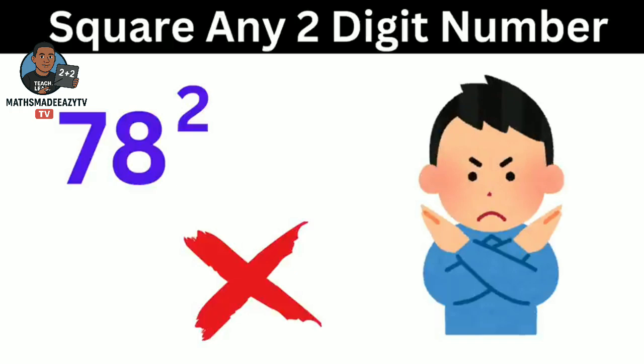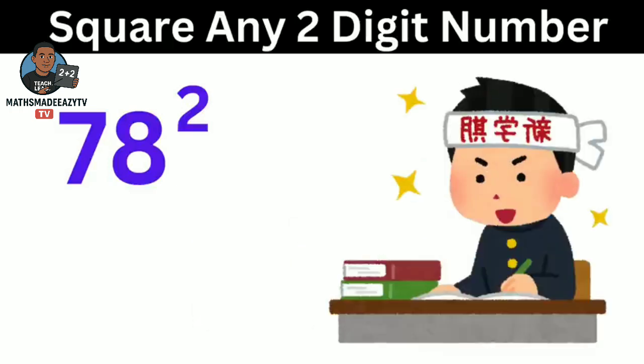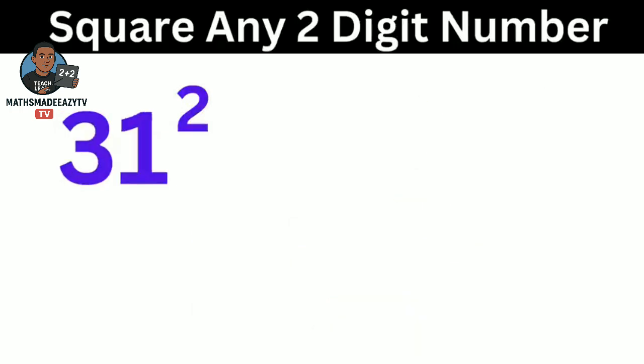Let us start with an example, like 31 square. The first thing is to divide it into 3 parts, like this.